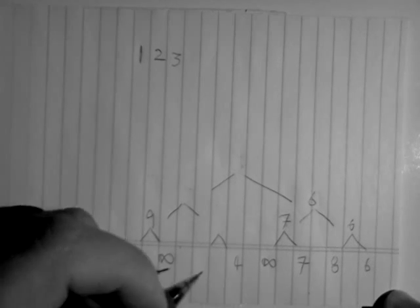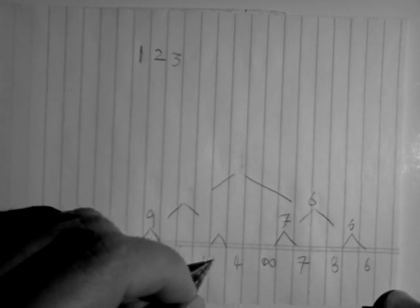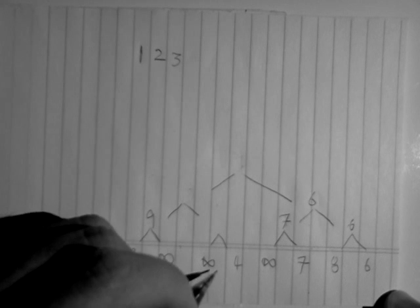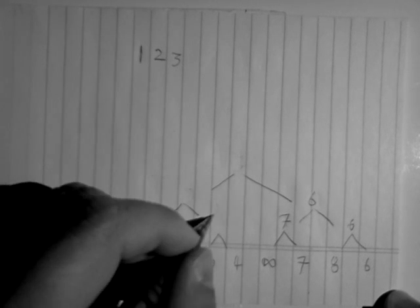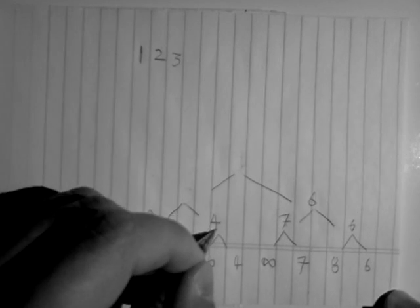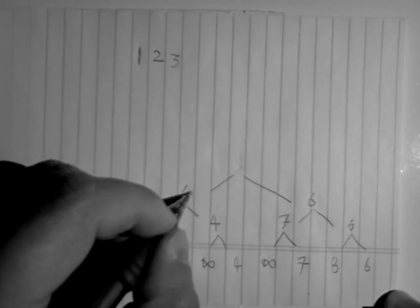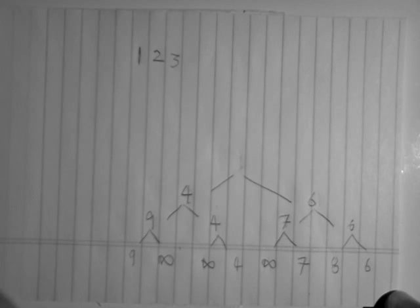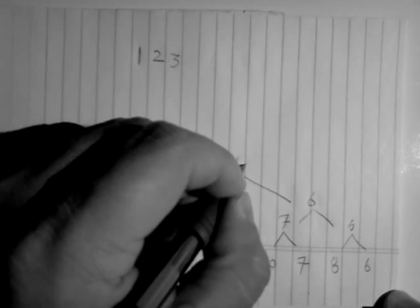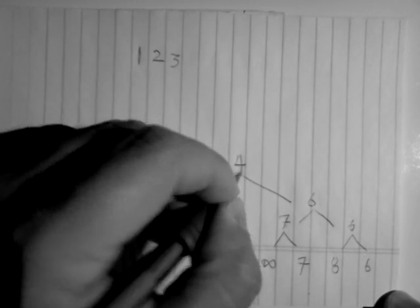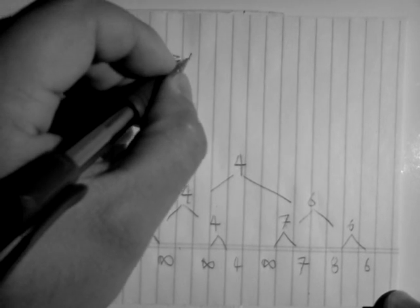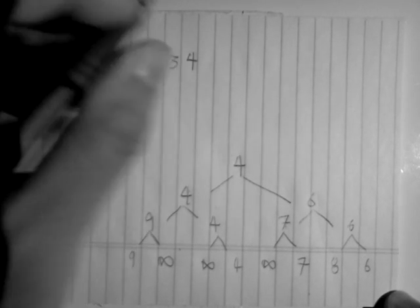3 is being replaced by infinity. Between 4 and infinity, 4 is smaller. Between 9 and 4, 4 is smaller. Between 4 and 6, 4 is smaller. So 4 is being popped out.